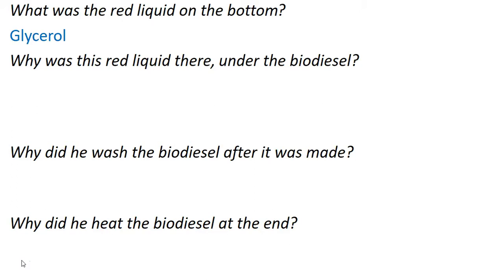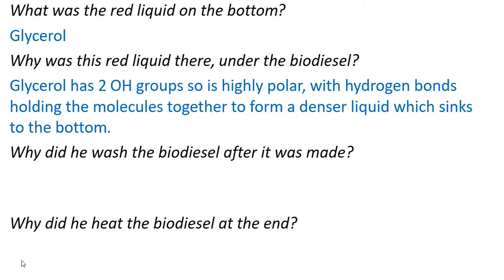Okay, so the red liquid on the bottom was glycerol. Why was it there? Because glycerol has two hydroxyl groups so it's highly polar, and it forms hydrogen bonds with itself, holding the molecules really closely together. So it makes a dense liquid which sinks to the bottom, and it's not miscible - doesn't dissolve in and mix with the biodiesel, which is non-polar.